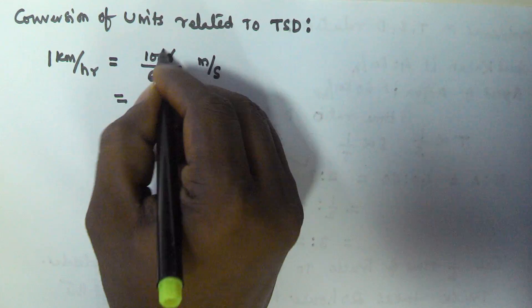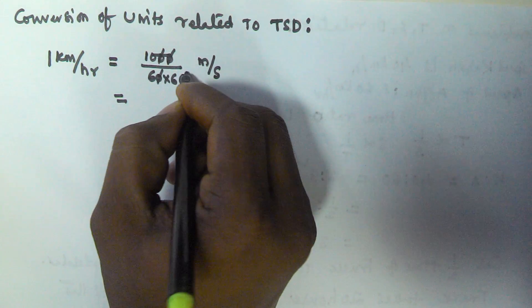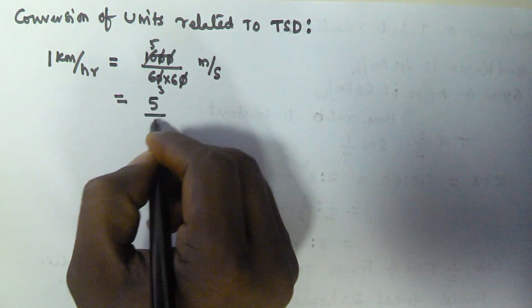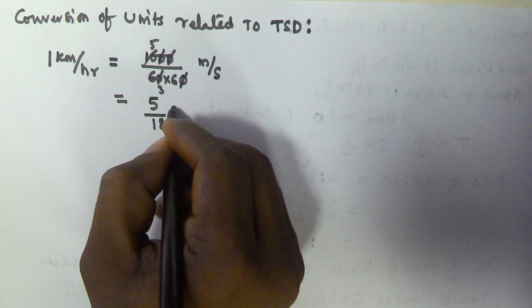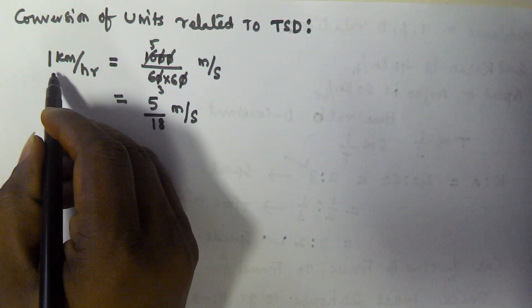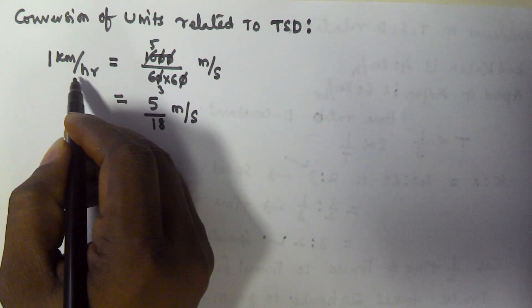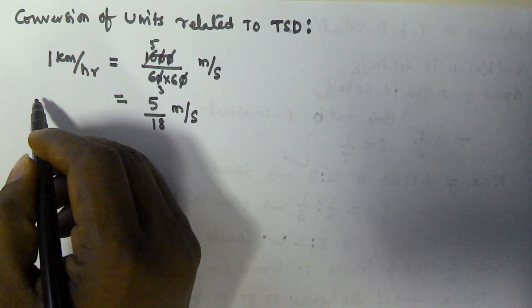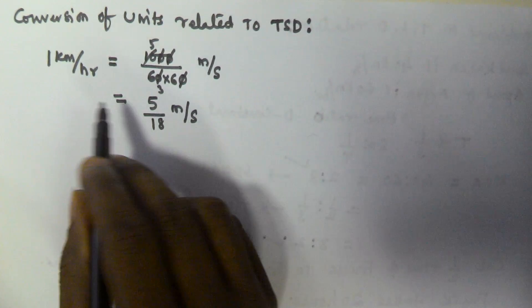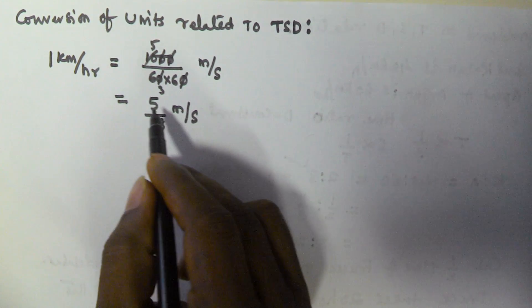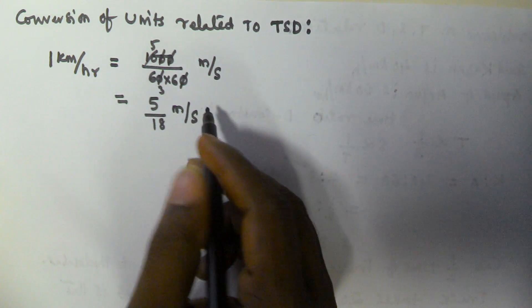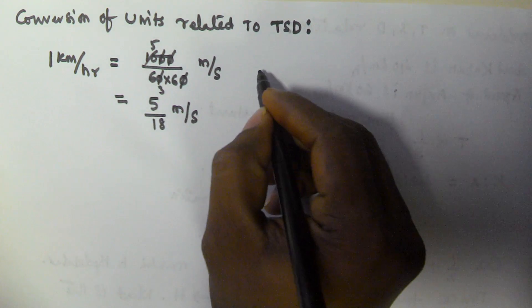If we solve this, that is going to be 5 by 18 meters per second. So that means if speed is given in kilometers per hour and you want to convert that into meters per second, multiply that kilometers per hour value by 5 by 18, and then the units are converted into meters per second.